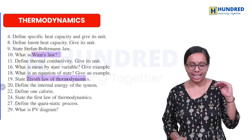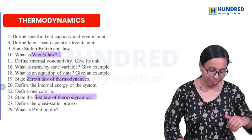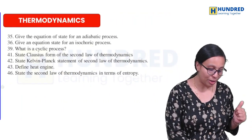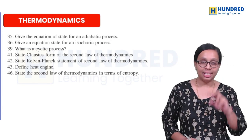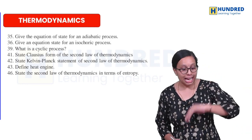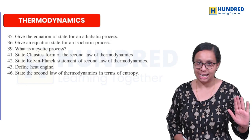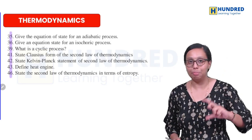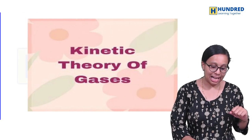Zero Law and internal energy definition. One calorie definition. First Law of Thermodynamics and quasi-static process. PV diagram and equation of state for adiabatic and isochoric processes. Compare the cyclic process — what is a cyclic process? Second Law of Thermodynamics: Clausius statement and Kelvin-Planck statement. How do you define entropy? These are all important questions. Mark the question numbers in the book back.